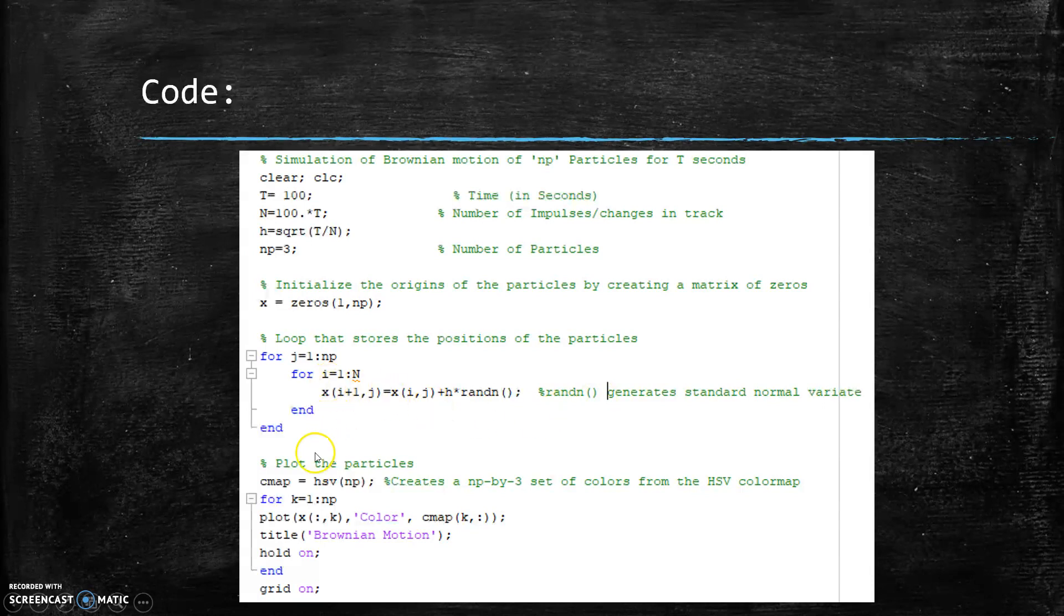And we're doing it through a standard normal variant. And then it goes to the loop NP. So we've got this is three times. And then N is set to, of course, the number of impulses. So it does it that many times.